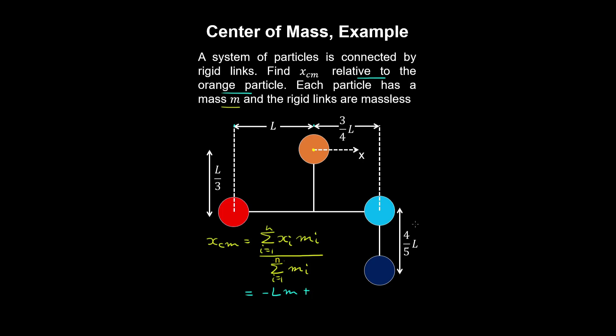Doing the same thing to the other particles, we multiply this by 2 because we have two blue particles, and the distance to the orange particle is obviously zero, so we ignore it.